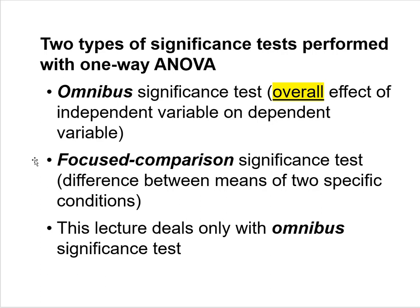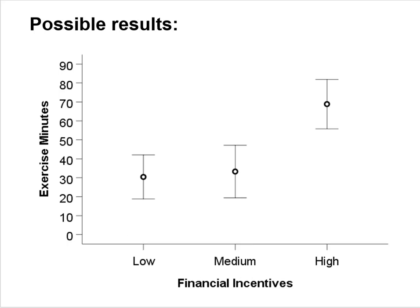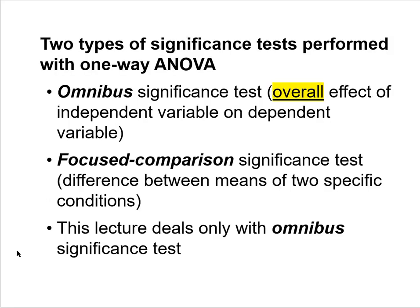The other kind of significance test performed with one-way ANOVA is the focused comparison significance test. With a focused comparison, you're looking at the difference between the means of two specific conditions. For example, you would ask: is there a statistically significant difference between the mean score of the high incentive group versus the medium incentive group? That is an example of a focused comparison.